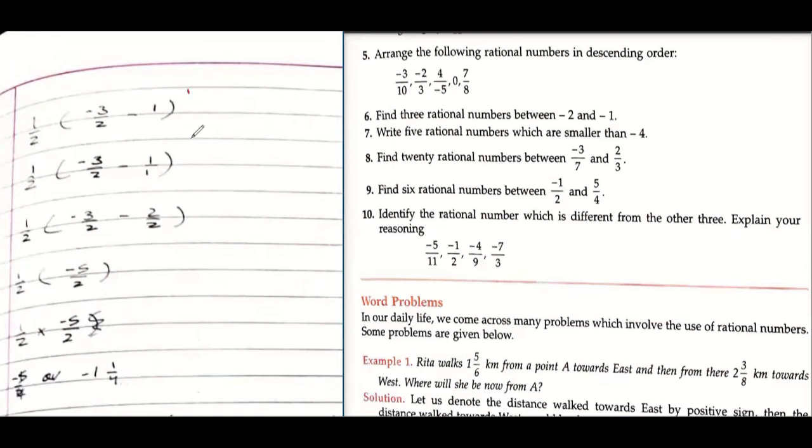So since I have two numbers like minus two and minus one, so can I write the same number with some other denominator, right? Now what is the denominator? One, one. So if I just rewrite the same thing by multiplying by ten: minus twenty upon ten and minus ten upon ten. So I have many rational numbers between them.